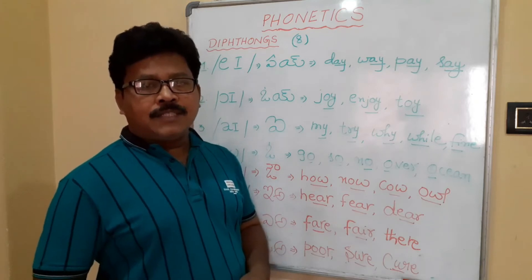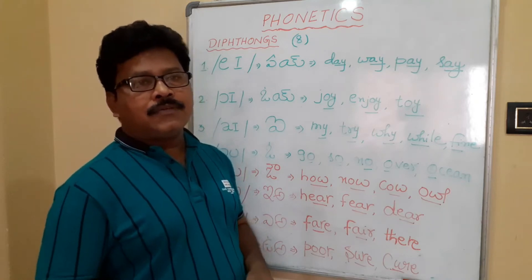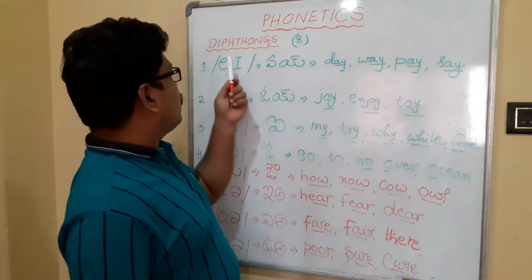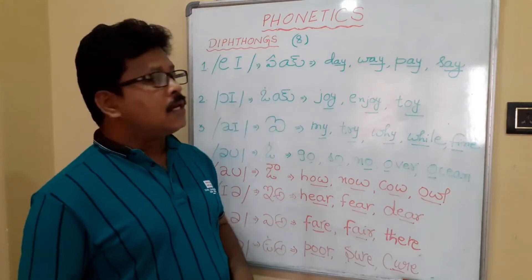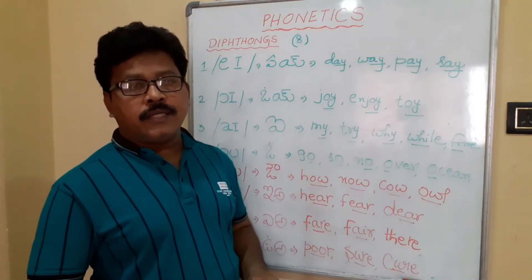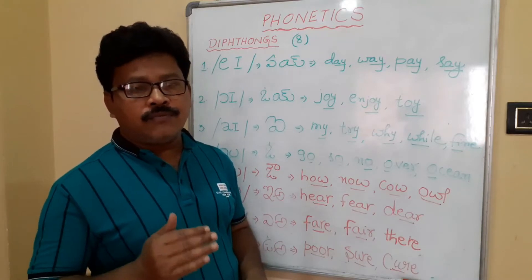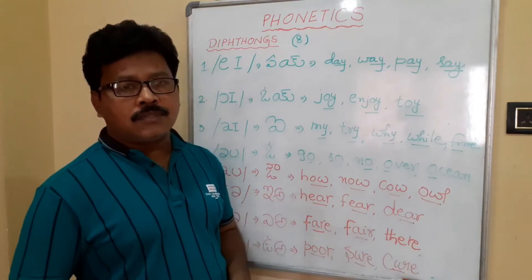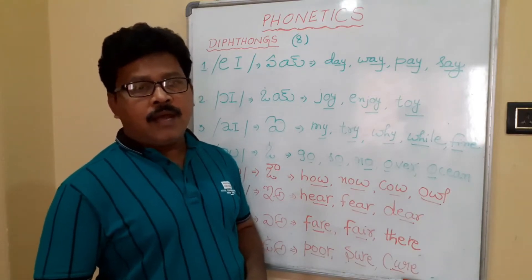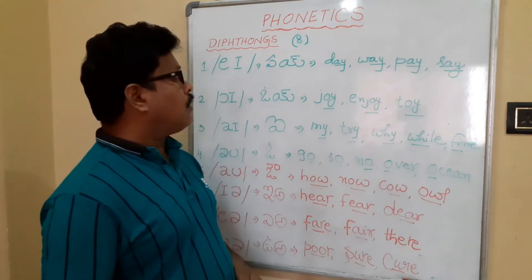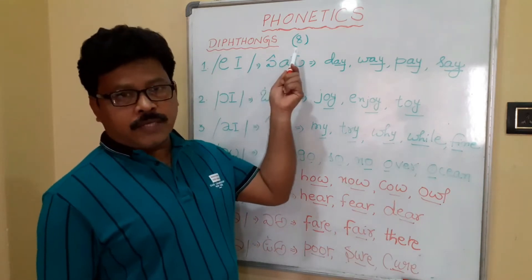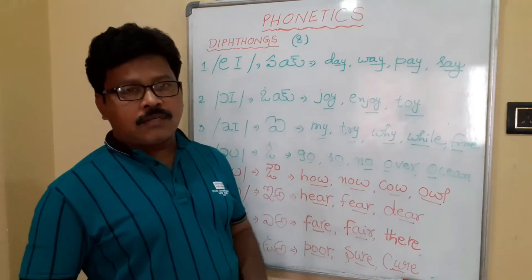Hello students, welcome back to my channel. In today's video, we are going to study the diphthongs part of vowel sounds. Already we learnt that there are 20 vowel sounds and 24 consonant sounds, making a total of 44 English sounds. Among these 20, 12 are monophthongs and 8 are diphthongs.